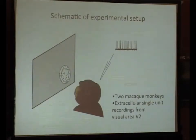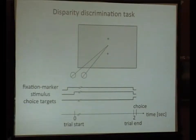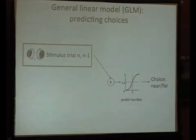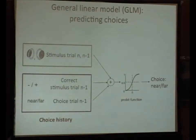I recorded the activity of single units in area V2 from disparity-selective neurons while the monkeys were performing this task. As soon as they started fixating, the stimulus would come up and be presented for a fixed duration of 2 seconds, after which if they made a choice toward the correct choice target they would receive a liquid reward. I'm going to analyze this dataset using a GLM model where I put in: the stimulus on the current trial, the stimulus on the previous trial, whether the previous trial was correct, and what the choice on the previous trial was. This approach to characterizing the monkey's behavioral strategy was developed by Jakob Macke and colleagues, with whom I'm collaborating on this analysis.